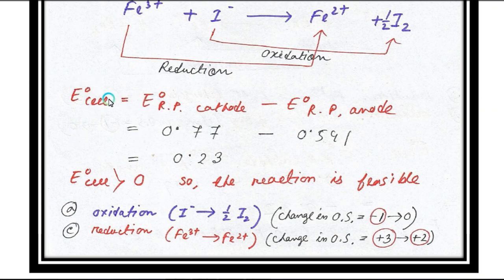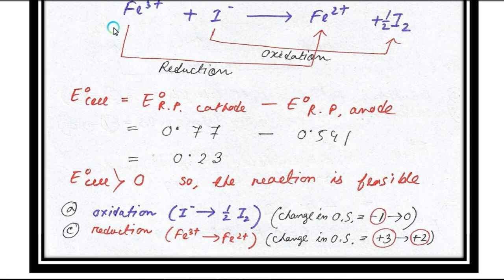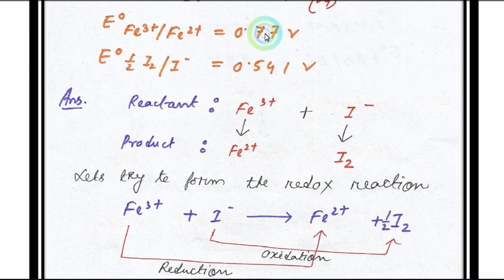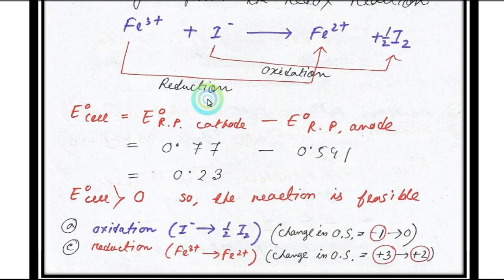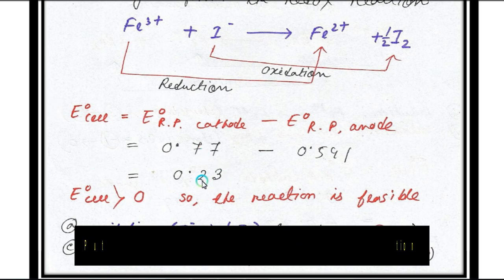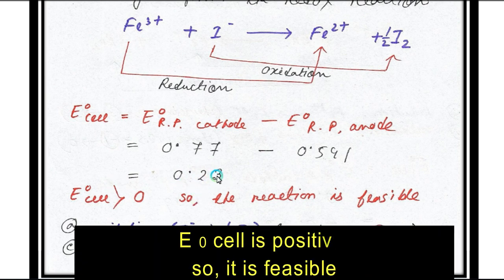Now, the formula for E° cell is: E° cathode minus E° anode. Cathode is where reduction happens. So Fe3+ to Fe2+ at cathode has E° = 0.77 V. At anode, oxidation happens: I- to I2 with value 0.54 V. E° cell = 0.77 - 0.54 = 0.23 V, which is positive, so the reaction is feasible.